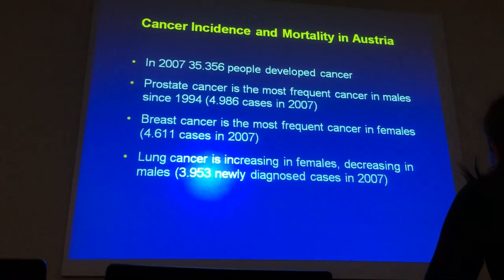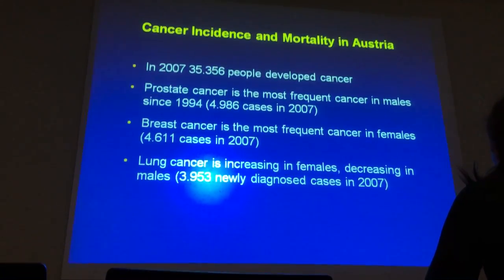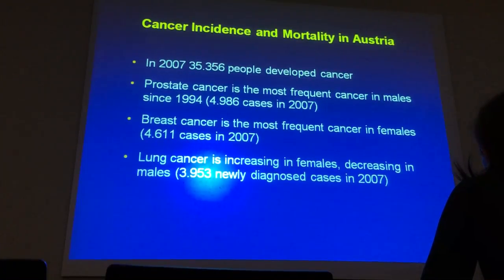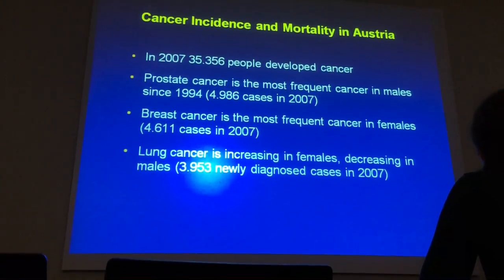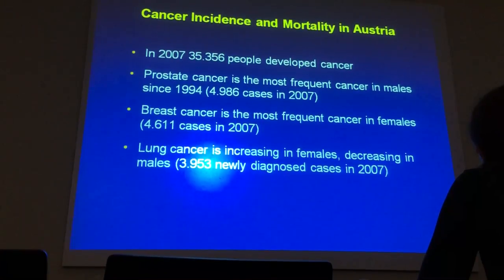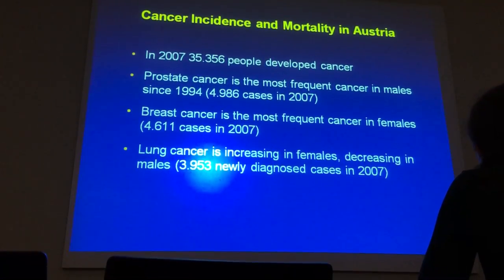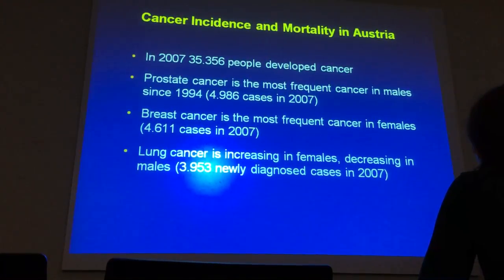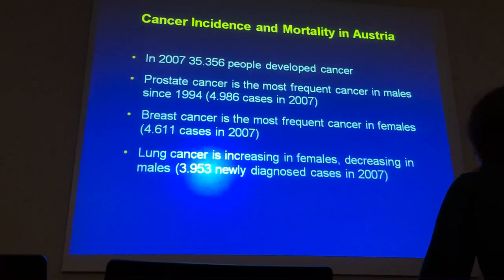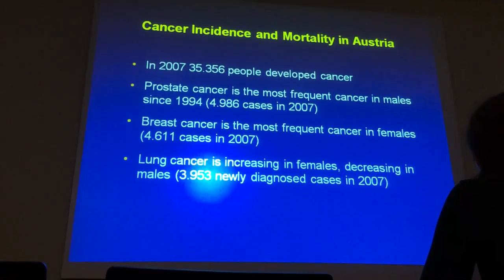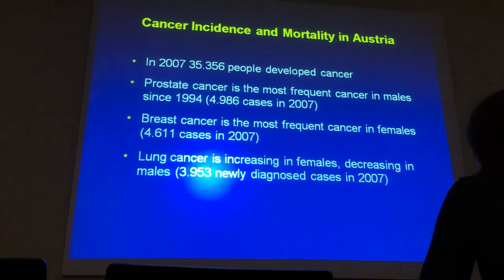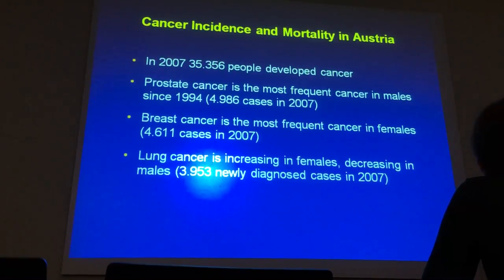In 2007 in Austria, 35,000 people developed cancer. Prostate cancer was the most frequent cancer in males with 5,000 cases, while in females it was breast cancer, also almost 5,000. Lung cancer is increasing in females because 20 years ago more and more women started to smoke, and now we see more female lung cancer patients, while male smokers had already decreased 20 years ago.